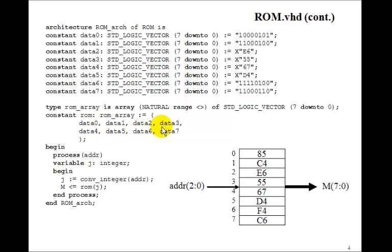Namely this data 0 to data 7. So data 0 to data 7 will store the 85, C4, E6, and so forth in this array containing 8 values.